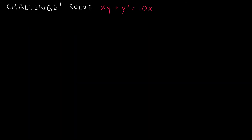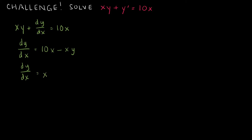Here's a harder challenge problem. Starting by rewriting as dy over dx equals 10x plus xy — wait, let me restate: I'm going to rewrite as dy over dx equals 10x, then subtract xy from each side, giving dy over dx equals 10x minus xy. Variables aren't separated yet, so I factor an x out of the right side: dy over dx equals x times (10 minus y).